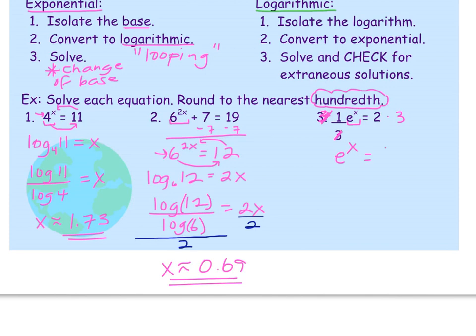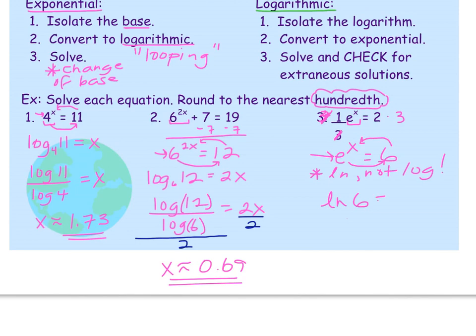Step two: convert to logarithmic. Our base is e, so that's the ln rule — we use ln, not LOG. When we convert, we write ln of 6, and it equals x. Since base e is always implied in ln, we don't write the sub-base. Type ln(6) on your calculator and you should get approximately 1.79, rounded to the nearest hundredth.